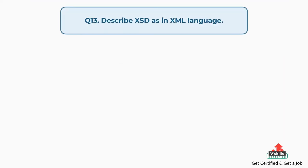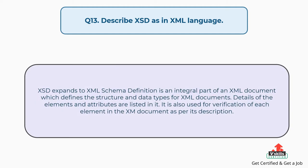Question number thirteen: describe XSD as an XML language. XSD expands to XML Schema Definition, an integral part of an XML document which defines the structure and data types for XML documents. Details of the elements and attributes are listed in it. It is also used for verification of each element in the XML document as per its description.